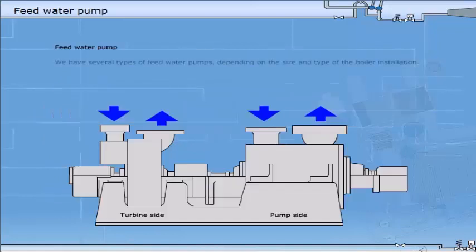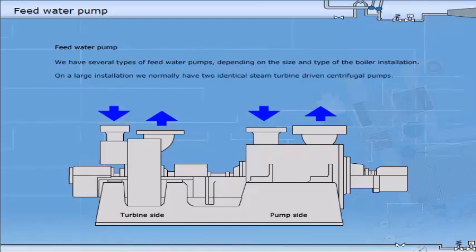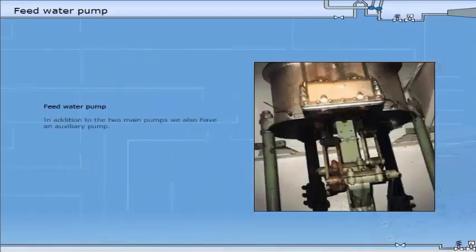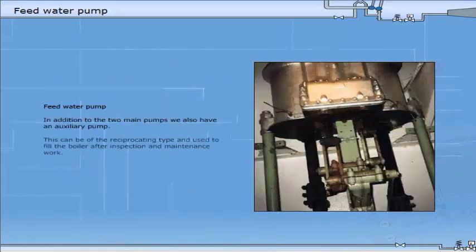We have several types of feed water pumps, depending on the size and type of the boiler installation. On a large installation, we normally have two identical steam turbine driven centrifugal pumps. Each of the pumps has a capacity well above the total boiler capacity. In addition to the two main pumps, we also have an auxiliary pump. This can be of the reciprocating type and used to fill the boiler after inspection and maintenance work.